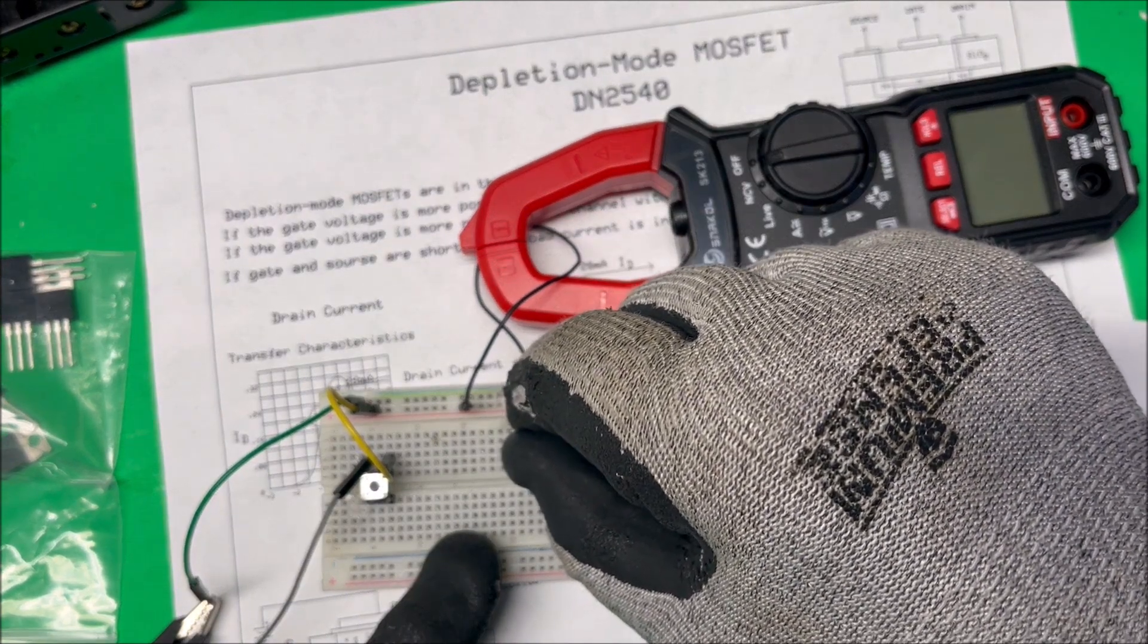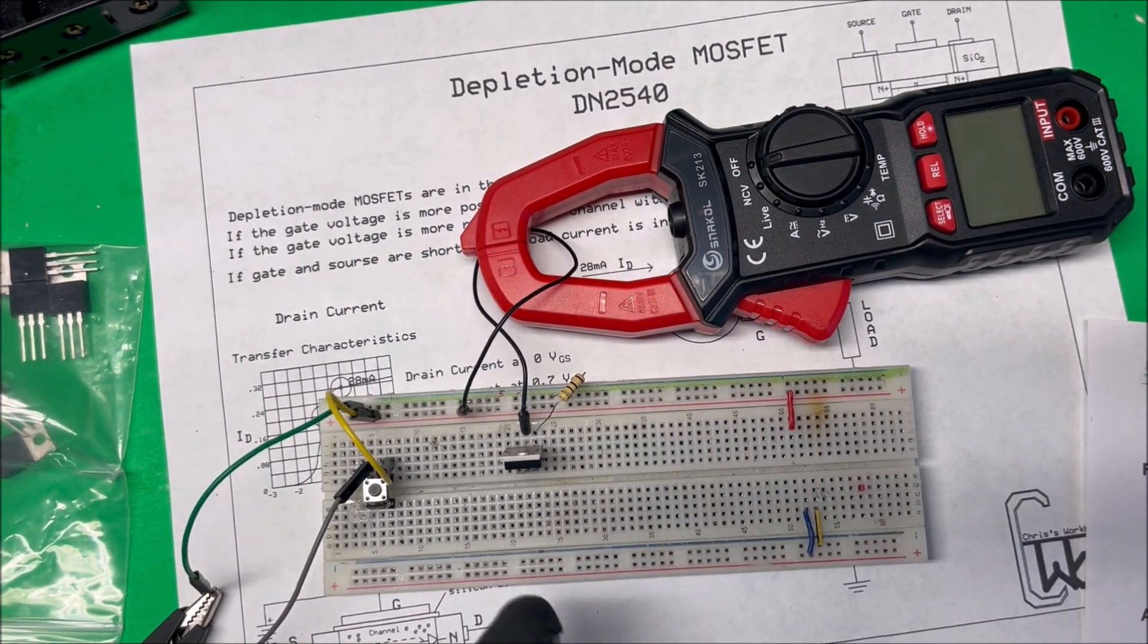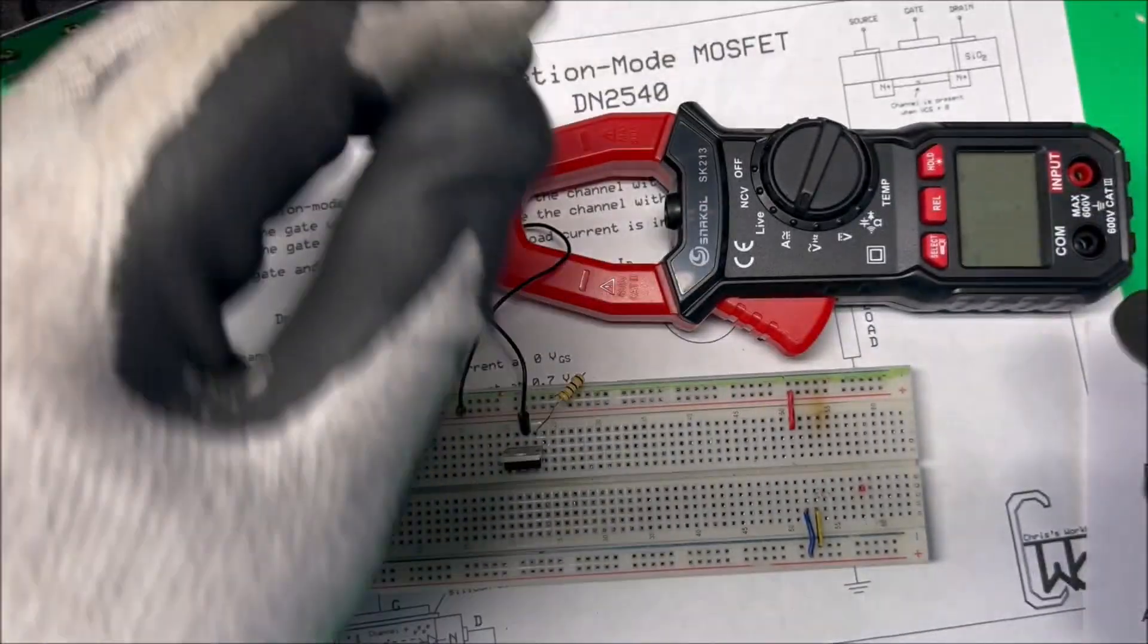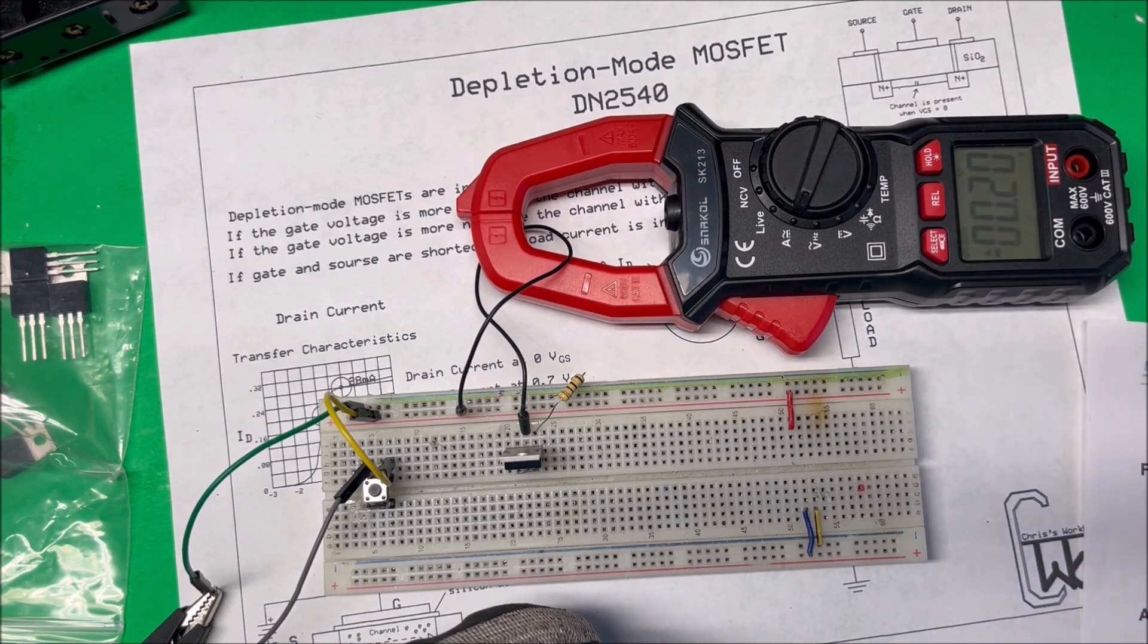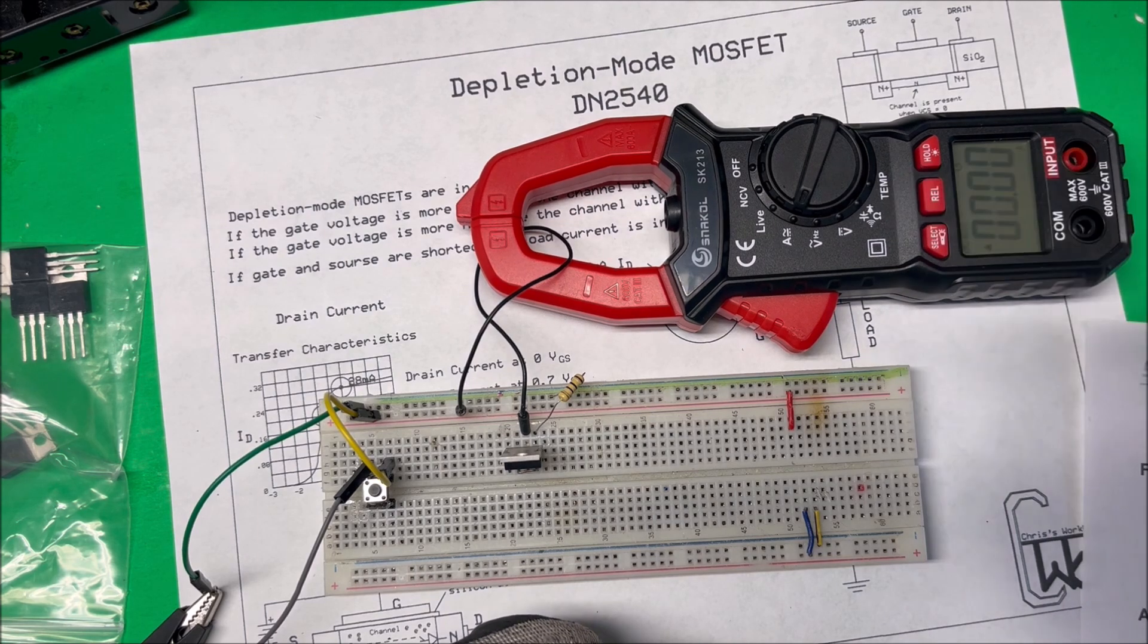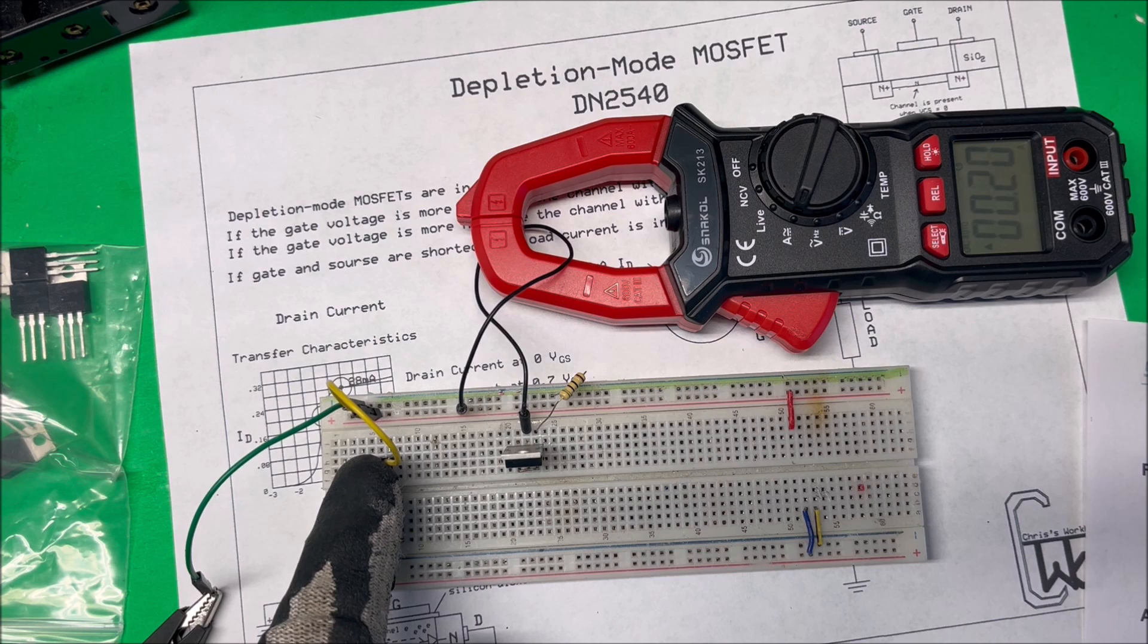Put that in here. Okay, so we've got the gate and the source shorted out. We'll put that on DC. Try to clear that out. There we go. And then we'll see what we have on this.